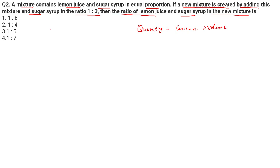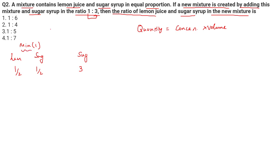If some quantity is constant, then the concentration times volume at different values will always be equal for that particular quantity. Here we have lemon and sugar in equal proportion, so if this mixture is entirely one unit, then half is lemon and half is sugar. The pure component I'm adding — sugar — is three times the first one, so I'm taking sugar of three quantity.